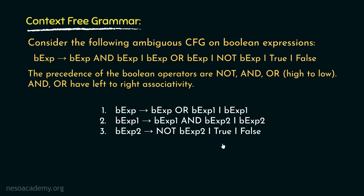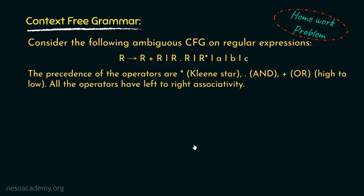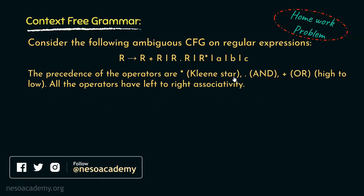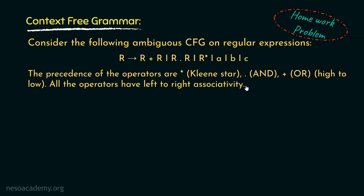This is how we can convert an ambiguous grammar into an unambiguous one. For a homework problem: consider the following ambiguous CFG on regular expressions. R can be rewritten as R plus R, or R dot R, or R Kleene-star closure, or A, or B, or C. The precedence from high to low is: Kleene-star, then dot (AND), then plus (OR). All operators have left-to-right associativity, so the rules involving them should be left recursive in the unambiguous version. Feel free to write your answers in the comment section.